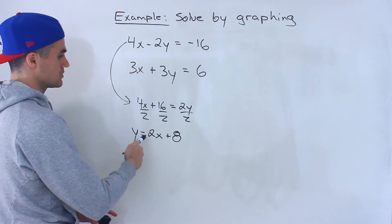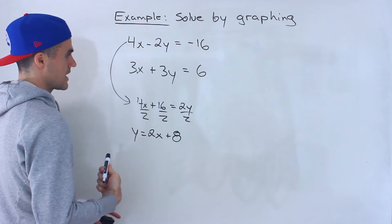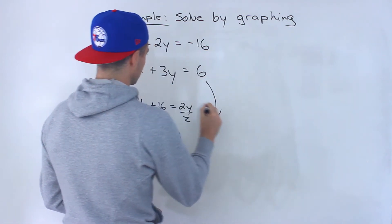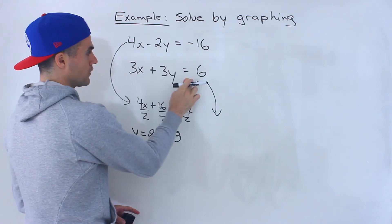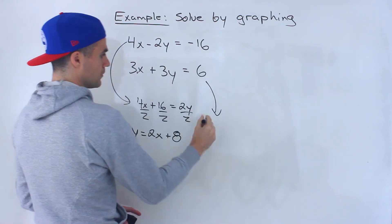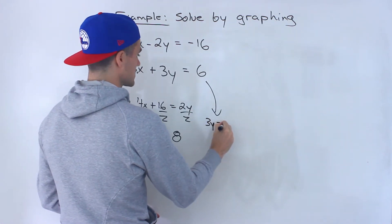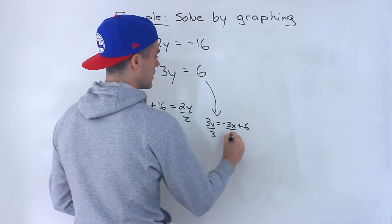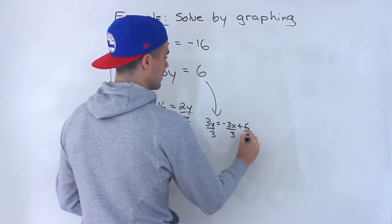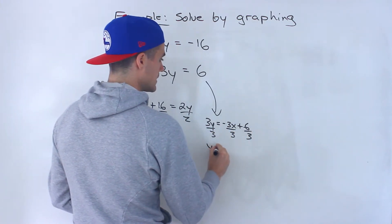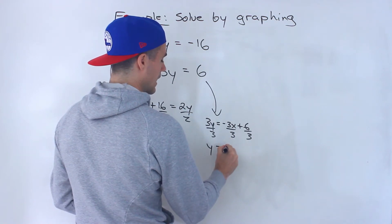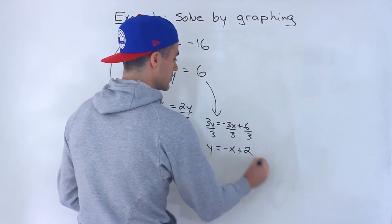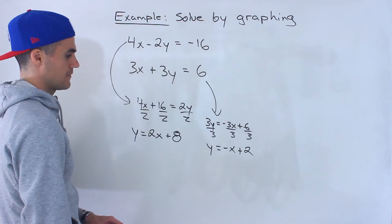So we got y equals 2x plus 8. And then over here for this line, if we bring the 3x over, we'd have 3y equals negative 3x plus 6. Divide everything by 3 and we would end up with y equals negative x plus 2.